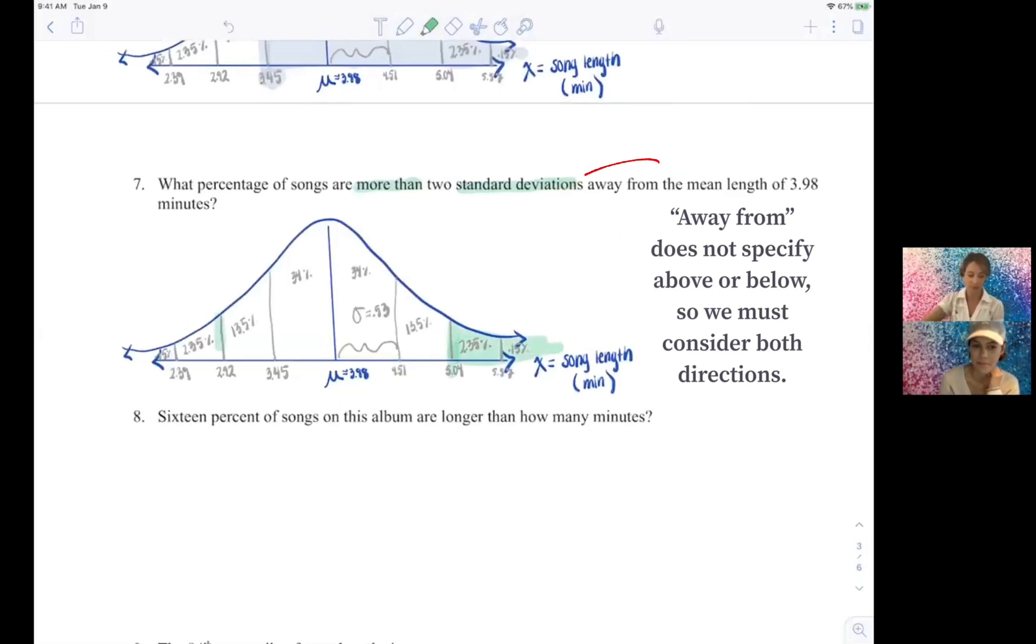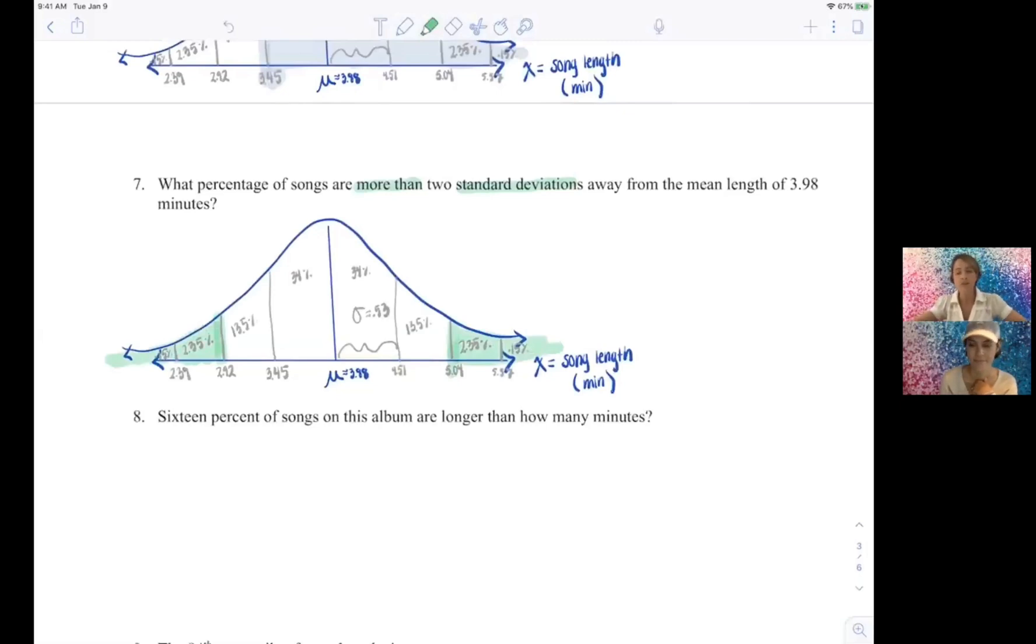But isn't this two standard deviations away? Yeah, we don't want to forget that. Yeah, and everything I'm shading over here on the left is also more than two standard deviations away from the mean. That's right, and so if we add all of those percentages together, we're going to get a nice five percent, right.